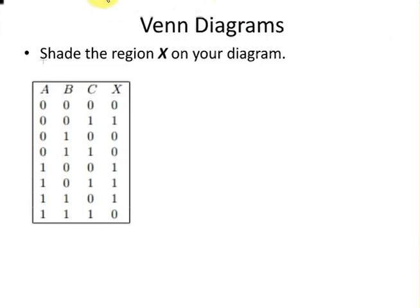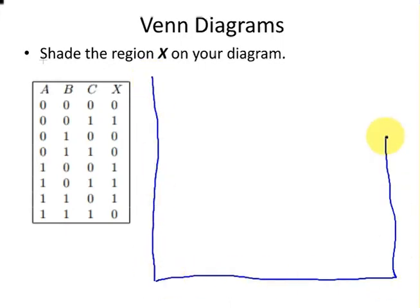I'm going to start off with just drawing out the universal set. Pardon my skills. This is going to correspond to the universal set here. I'm going to draw in the regions A, B, and C. I'm going to draw A here.